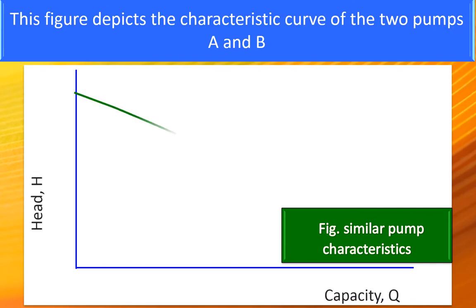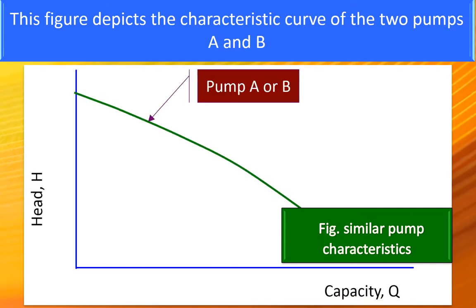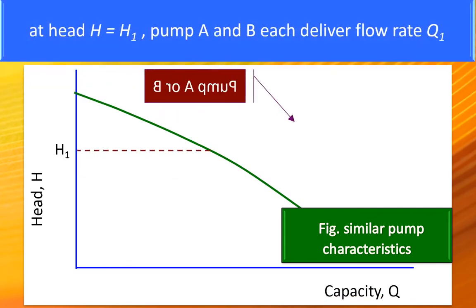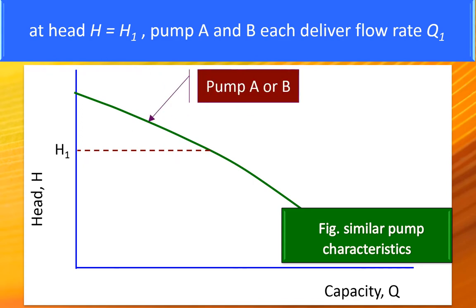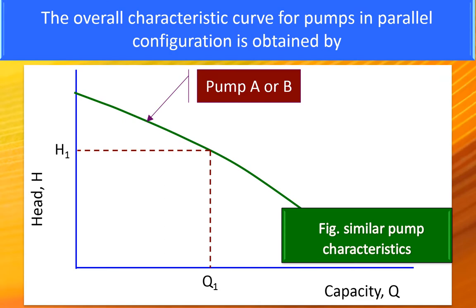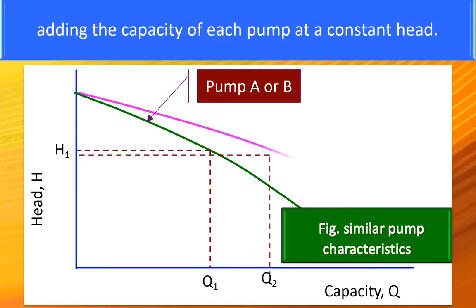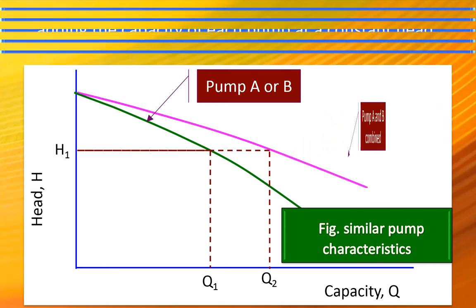This figure depicts the characteristic curve of the two pumps A and B. At H is equal to H1, the pump A and B each deliver the flow rate of Q1. The overall characteristic curve for the pumps in parallel configuration is obtained by adding the capacity of each pump at constant head.